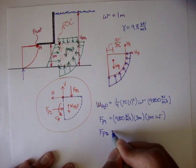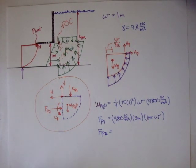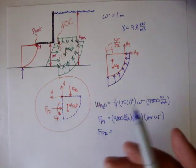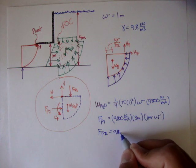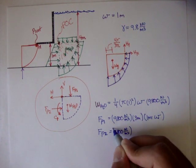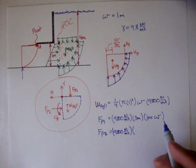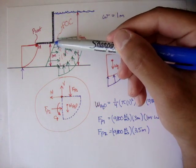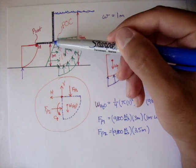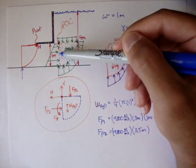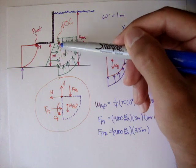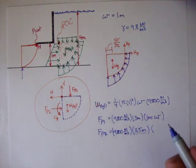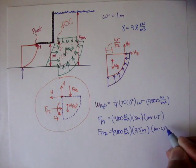FP2 is going to be equal to this force right here — it's the pressure at the centroid of the surface. That's 9,800 newtons per meter cubed, times — in this case it would be 3.5 meters — because from the free surface to here is 3 meters, but from here to the centroid of that surface, which is right here, is another 0.5 meters, because this is 1, making it 3.5. So this is the pressure times the area — again it's 1 meter times W, and W is equal to 1.